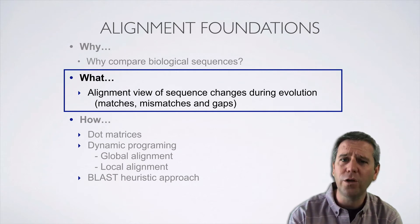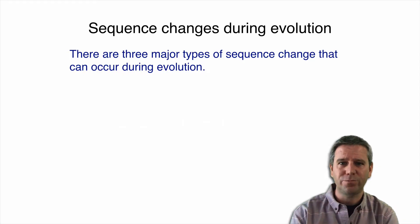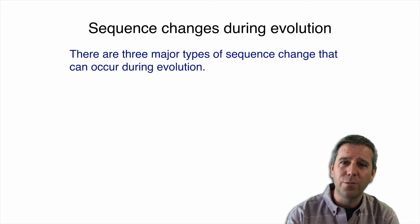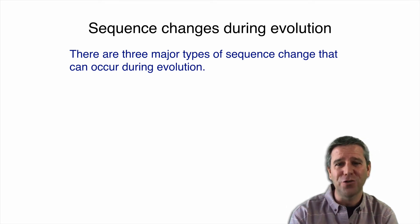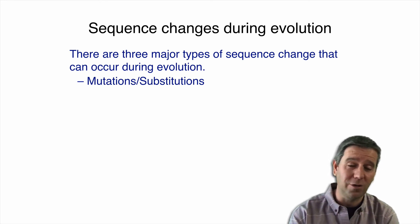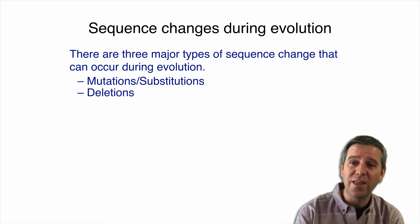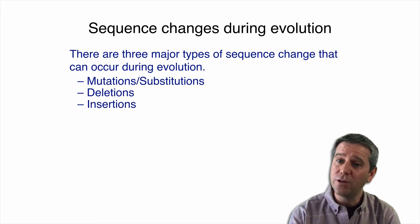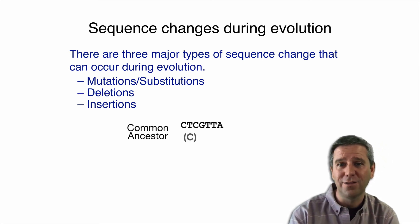So let's move on now to the what question. Returning to fundamentals, there are three major types of sequence change that can occur during evolution: mutations, also called substitutions, where one character changes into another; deletions; and insertions — where you remove or insert amino acids or nucleotides.